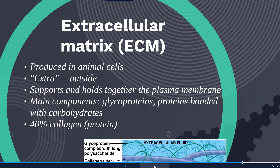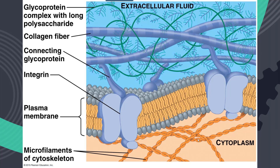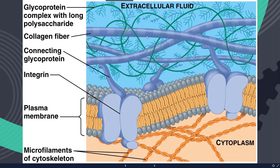The extracellular matrix is produced in animal cells — and by extracellular we mean outside. It's the substance holding together or supporting the plasma membrane, and it consists of components such as proteins bonded to carbohydrates, called glycoproteins, as well as approximately 40% collagen, another type of protein. Looking at this diagram, we have the cellular membrane in the middle, microfilaments providing structure along the extremities of the cell, and various fibers making up the fluid on the outside of the cell to help guide and assist with movement of materials.